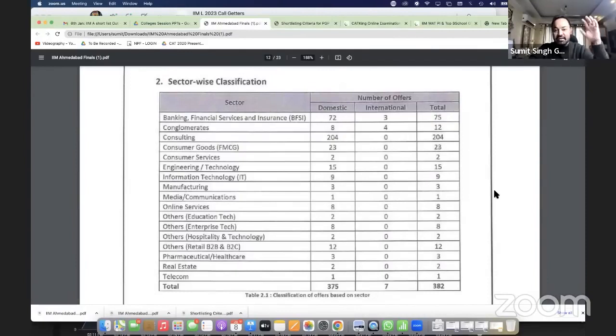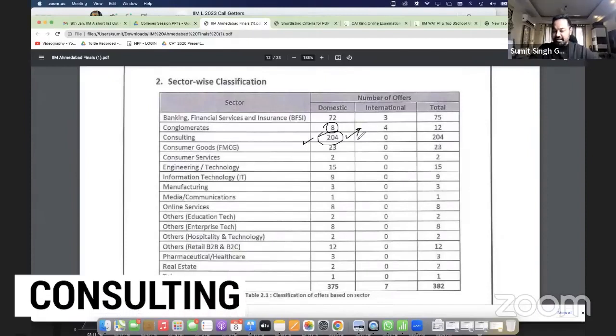When it comes to bigger conglomerates, big companies like Tata or Reliance, only 8 students are going there. But 204 students, nearly half, are going to consulting.